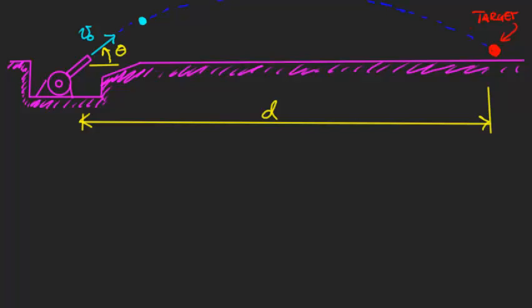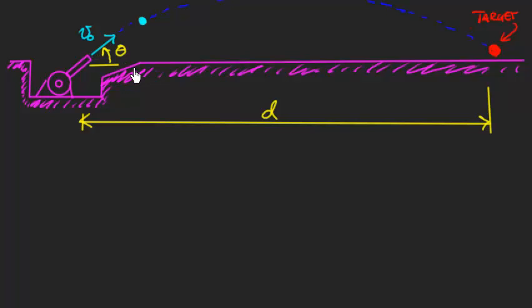Let's do a classical projectile problem. We have a cannon that shoots a cannonball flying through the air, and we're trying to hit a target which is a distance d away from the muzzle of the cannon. We're told this thing shoots the cannonball off with a speed v0, and we're going to find the angle theta at which to aim it so that it hits the target.